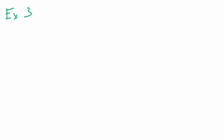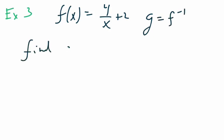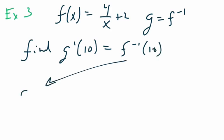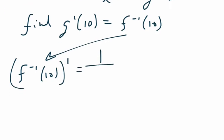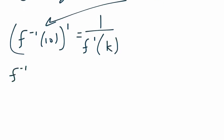New problem. Example 3. So, here we have f of x equals 4 over x plus 2. G is the inverse of f, and we want to find g prime of 10. So, again, I would recommend that you rewrite this as f inverse of 10. We're going to use the formula here. So, f inverse of 10 prime equals 1 over f prime of k. Let's figure out what a and k are. So, on the inverse, we have 10, which is the x value on the inverse, comma k. Which means that on f, we have k comma 10.